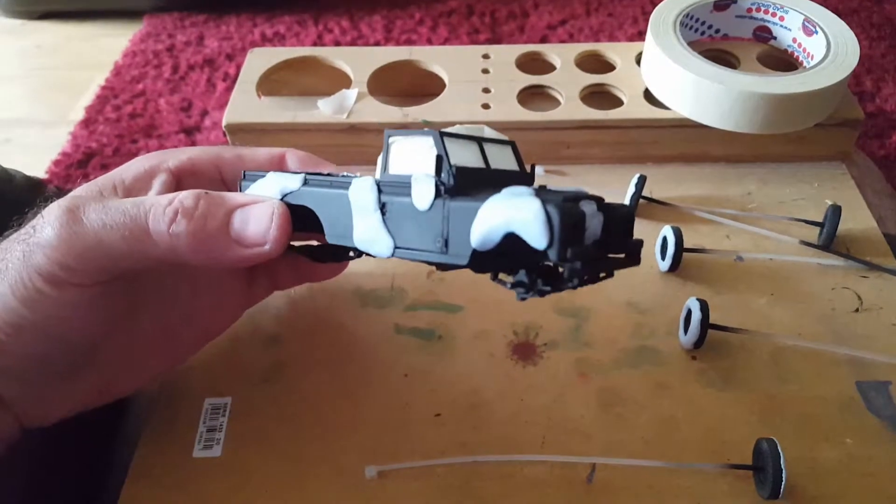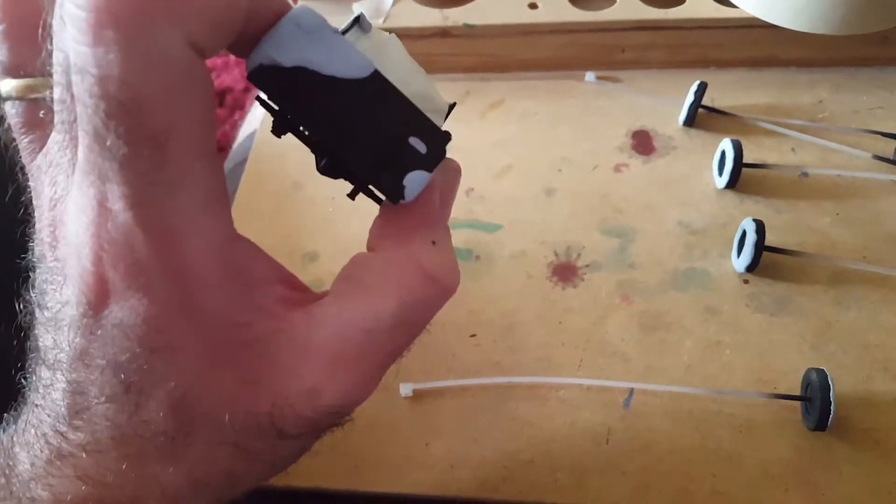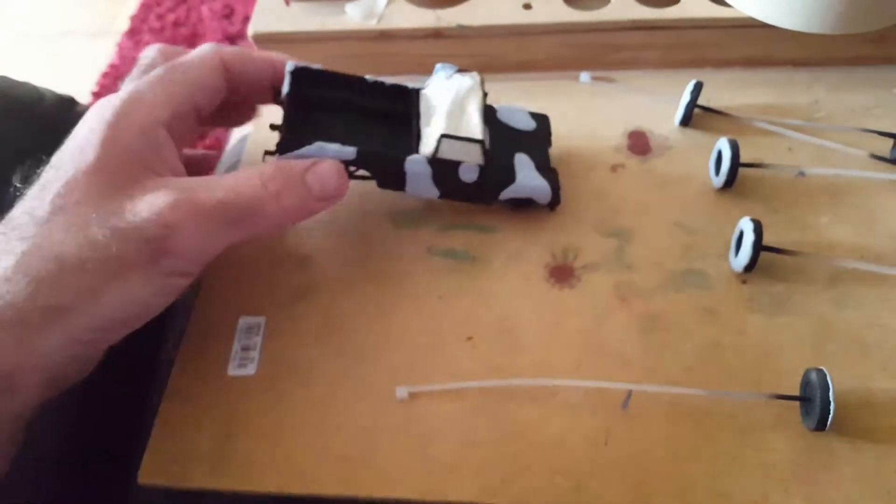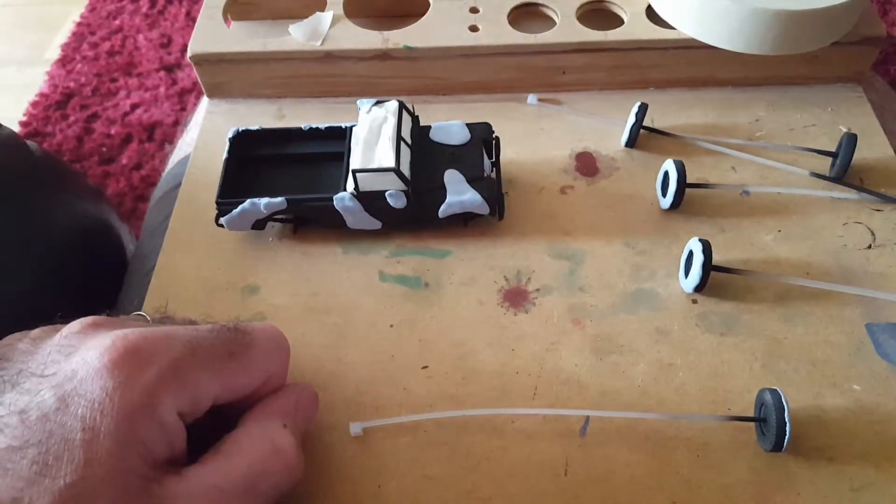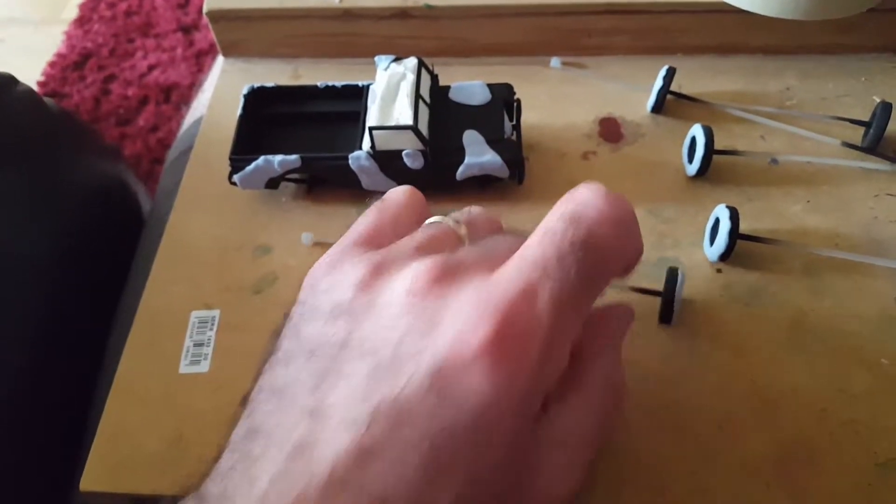So just shape it, squash it on, cover up the grille, cover up the Land Rover sign on the back, cover up the tires. I'm going to spray it up center, touch it up afterwards.